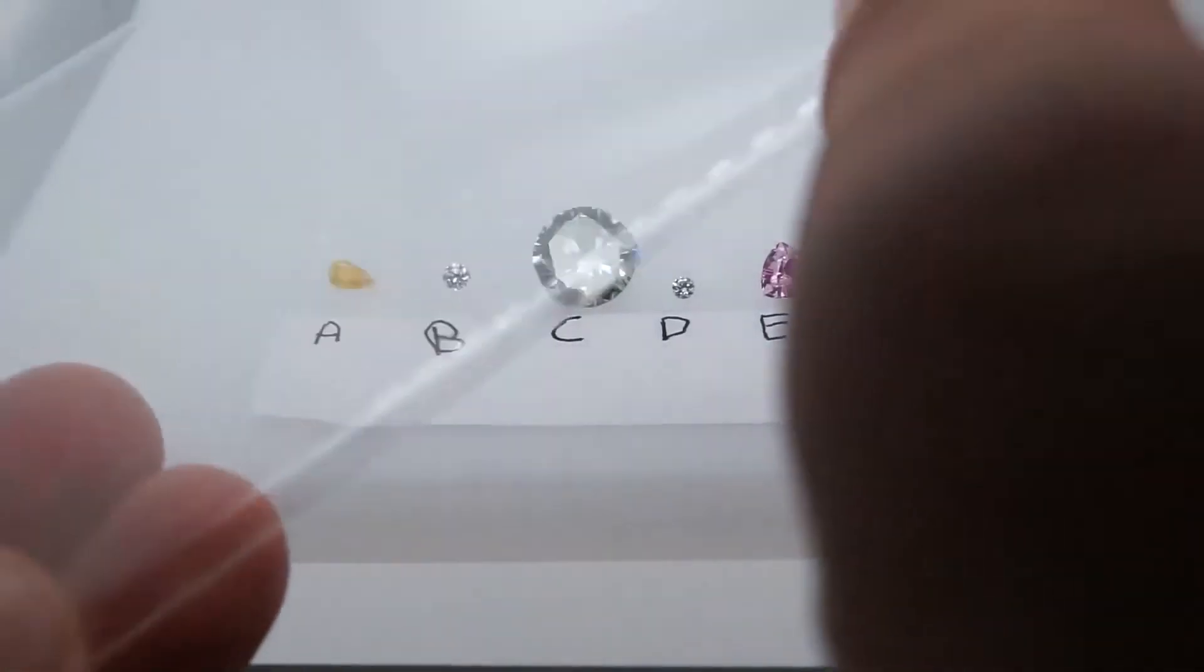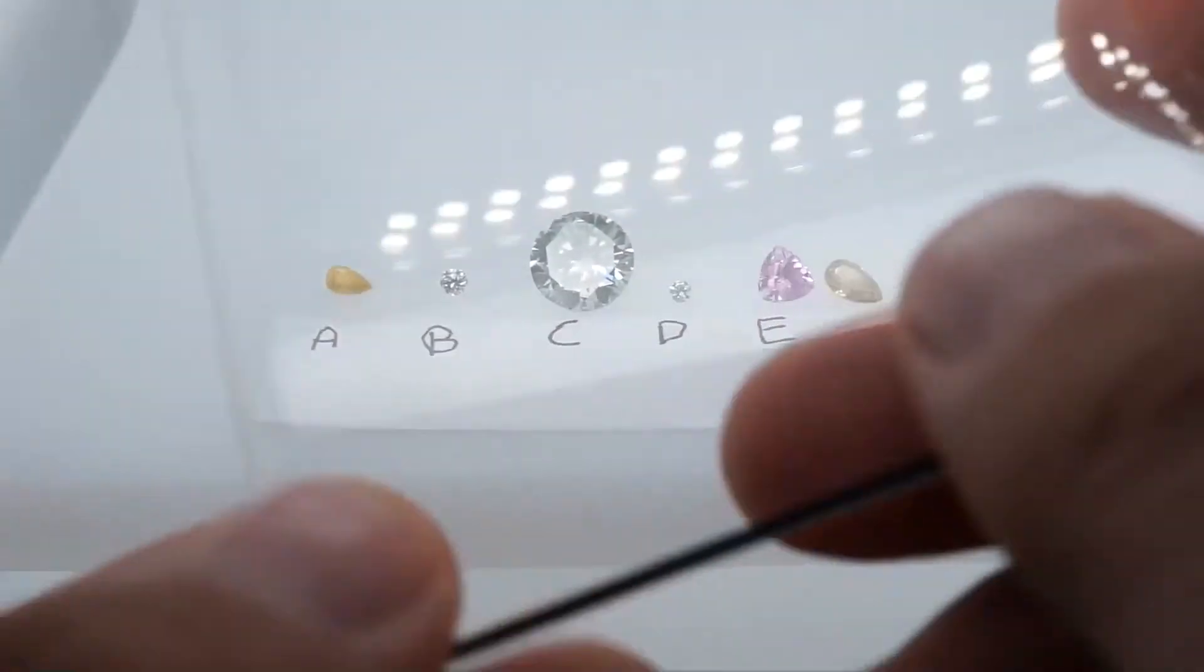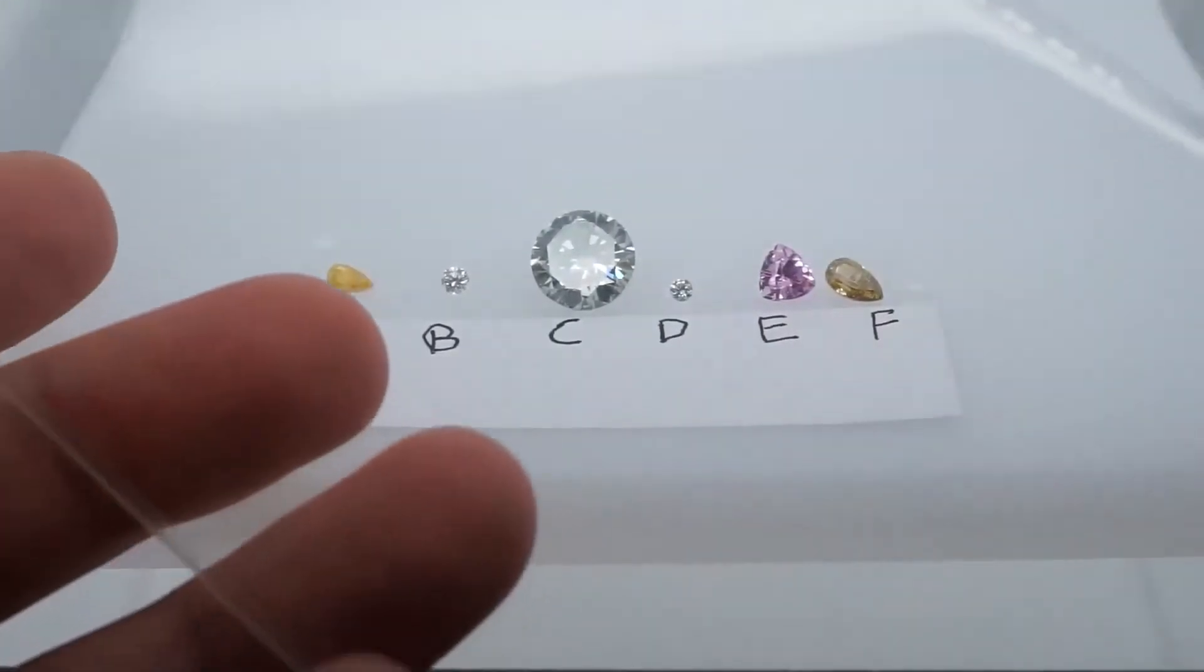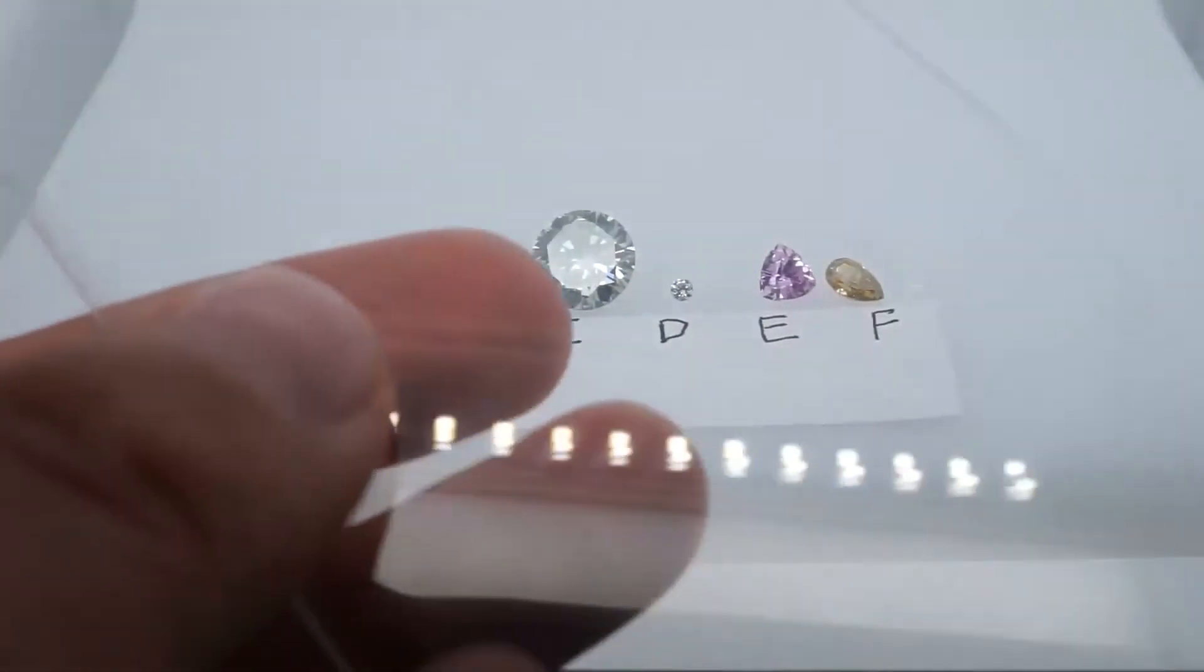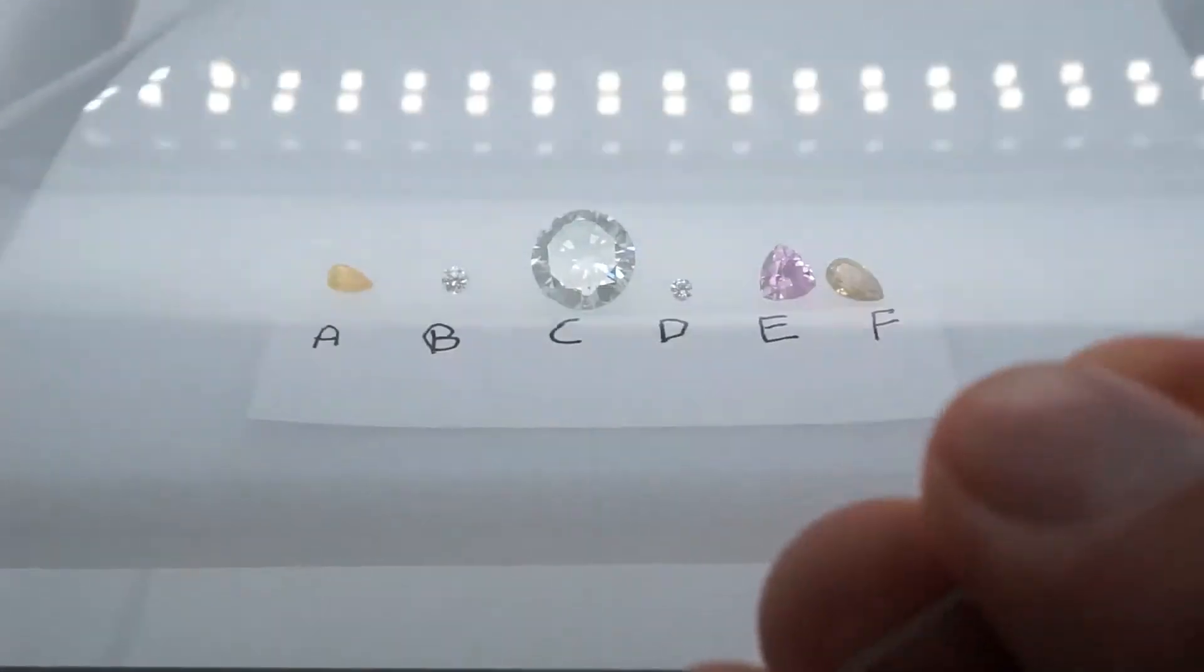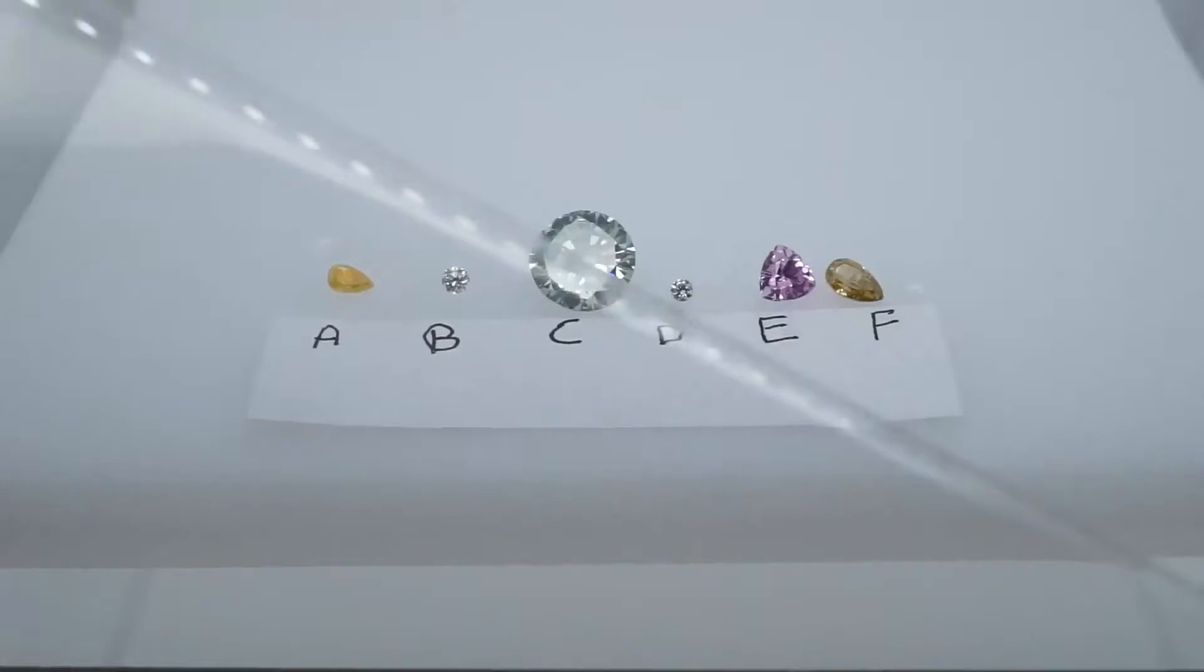Next test is the scratch test. I have a glass screen protector with a Mohs hardness between 7 and 8. The theory behind this test is that diamond is the hardest natural substance. It has a Mohs hardness of 10. So if it can scratch glass it will pass as a diamond. We'll go ahead and test out each one of these.